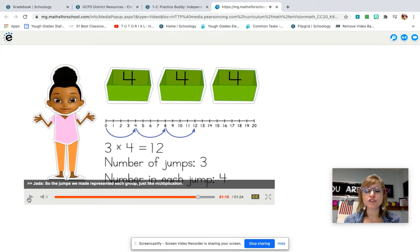So the jumps we made represented each group. That's very important to know when using this strategy, that the jumps equal the number of groups you have. So there are three groups here. So the number line needs to demonstrate or show three jumps. Three jumps.